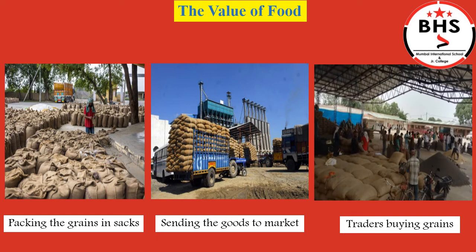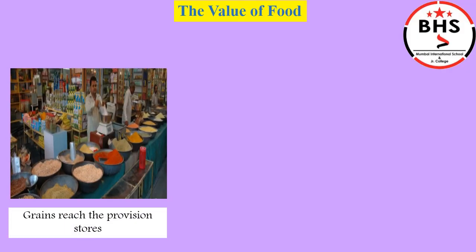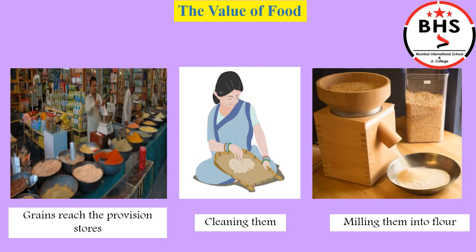When traders and wholesalers buy the grain in the market, the farmer gets the money. But this is not the end of the story — the bhakri is not ready yet. The grains are sold and sent all over the country by trucks and trains. The drivers, labourers, and porters too work hard. Transportation also takes a lot of money. The grains reach the provision stores, people buy them, sort out any stones or rubbish to clean the grains, and then get them milled into flour.